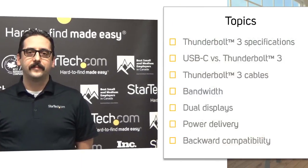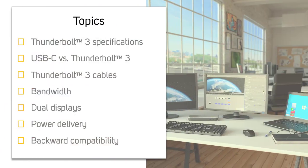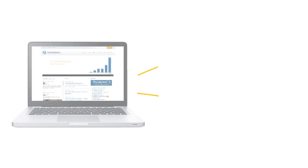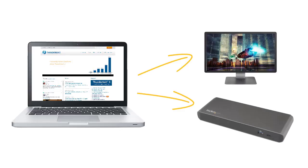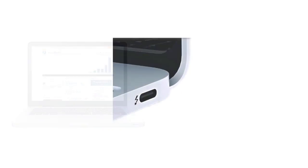Hello, my name's Keith from StarTech.com. Today, we'll be discussing Thunderbolt 3 and what you should know before you purchase a Thunderbolt 3 device. Thunderbolt 3 is the latest version of the Thunderbolt standard for connecting computers and peripheral devices such as docking stations and displays. Thunderbolt 3 uses the USB-C connector. Let's take a look at the USB-C specification in comparison to the Thunderbolt 3 specification.